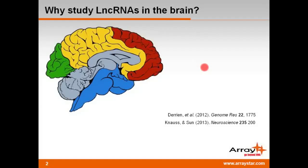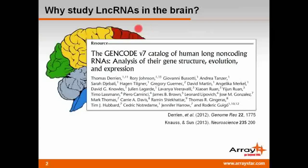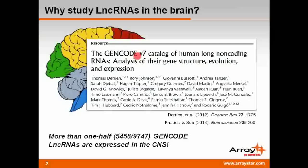The focus of this webinar is on the significance of LNCRNAs in the central nervous system. Recently, in a paper describing version 7 of the GenCode database of LNCRNAs, the authors manually curated nearly 10,000 stringently defined LNCRNAs in humans onto a custom-designed microarray. They used this microarray to analyze the expression of LNCRNAs in 26 human tissues, including nine regions of the brain. The data indicate that 5,458 out of 9,747, or 56 percent, of the LNCRNAs in GenCode are expressed in the central nervous system.